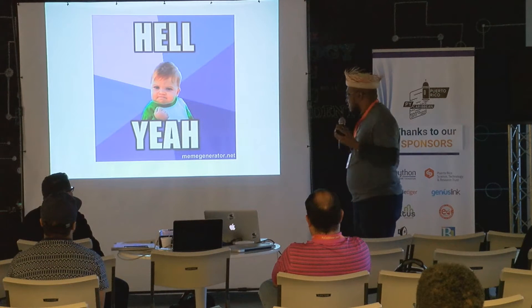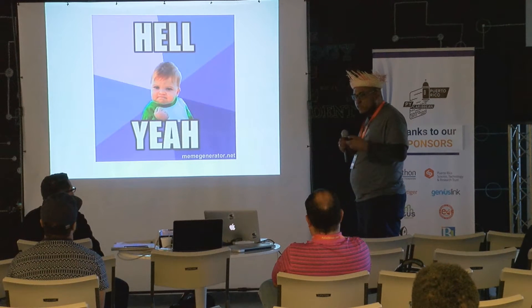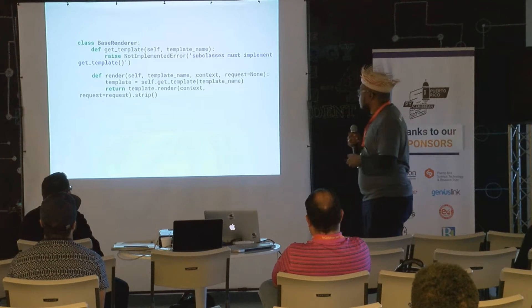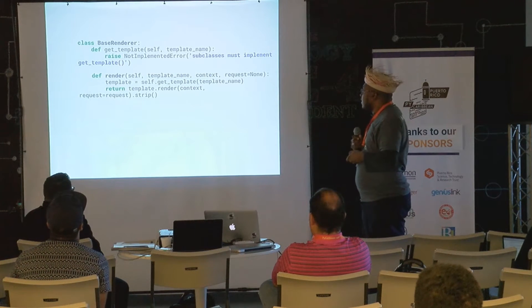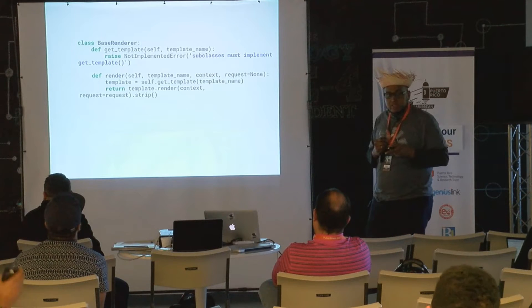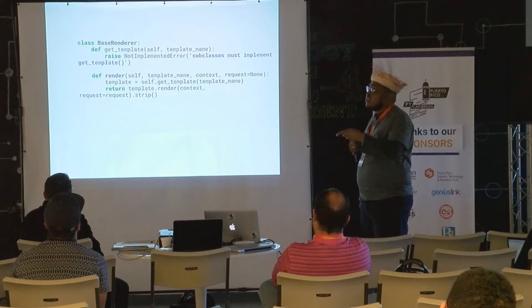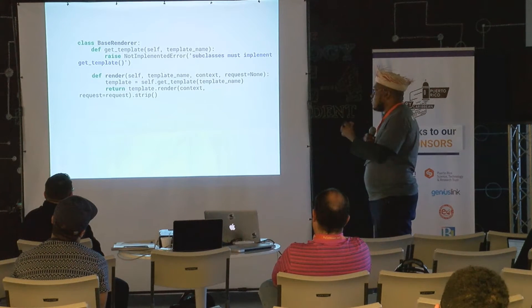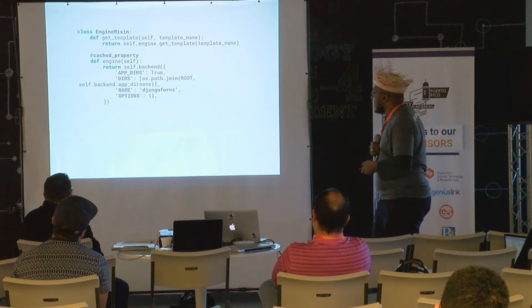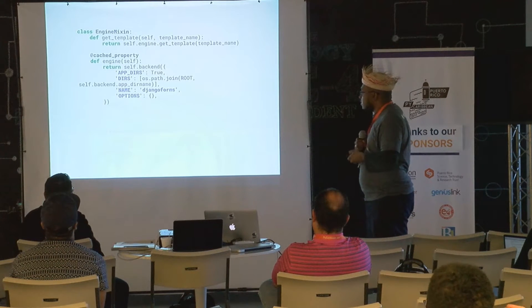I'm spending more time doing front-end work. It's like I don't have to do that thing where it doesn't belong. Basically, they created a base renderer that defines two methods: one is get_template, where you pass the template to the renderer — you normally implement that on your own renderer — and you have a render method that transforms the template into a string, as you would do normally. And you have a mixin where you can select the engine; otherwise it defaults to another template engine.